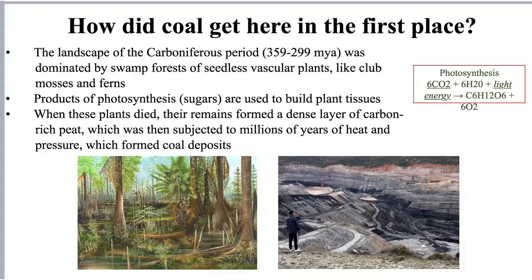Some of the fossil fuels that we use have been around for as long as 650 million years, but the vast majority of the coal we use was formed after the Carboniferous period — between 359 to 299 million years ago. During that period, the landscape of much of the planet was covered with swamp forests made up of early seedless vascular plants like modern-day club mosses and ferns. These plants grew quickly and covered much of the northern hemisphere, and when they died, their remains formed a dense organic layer.